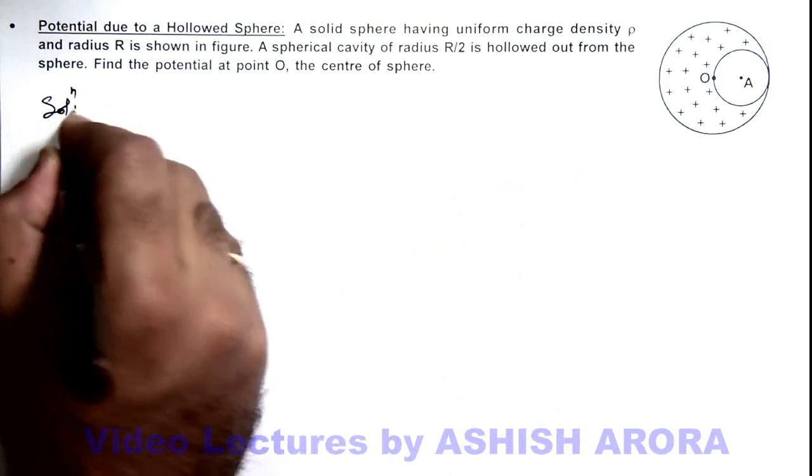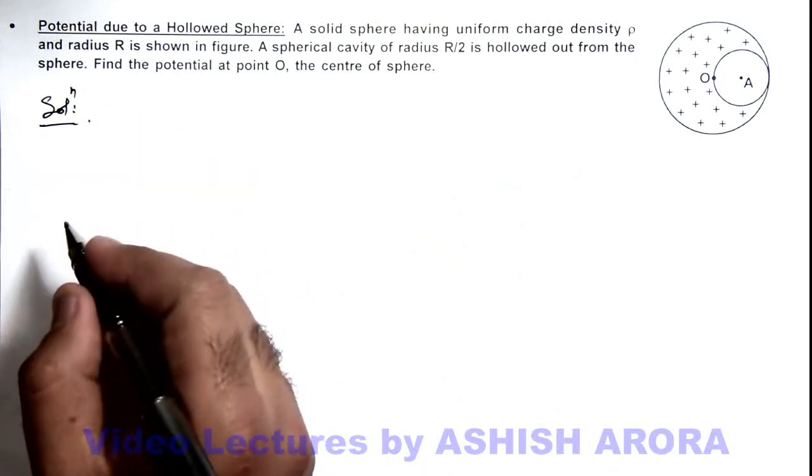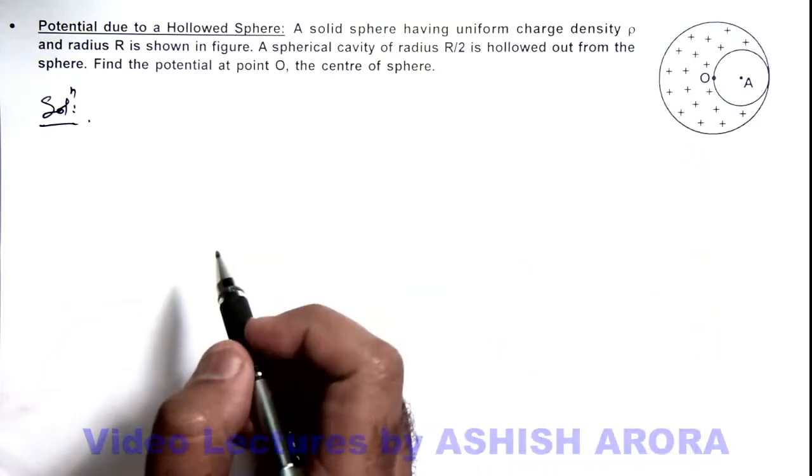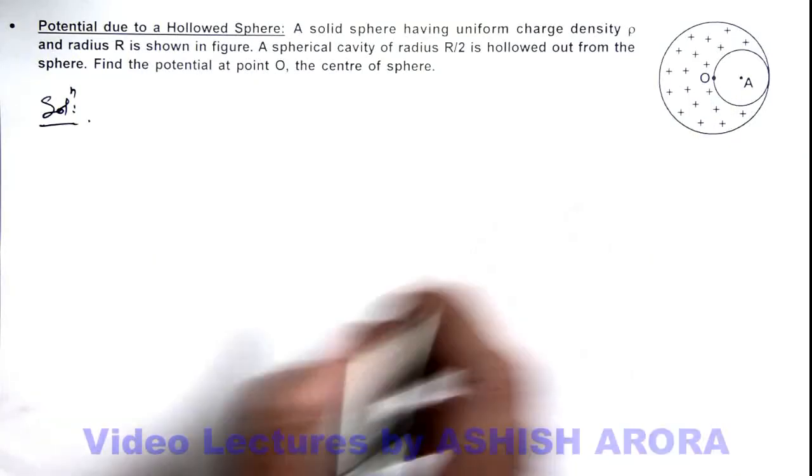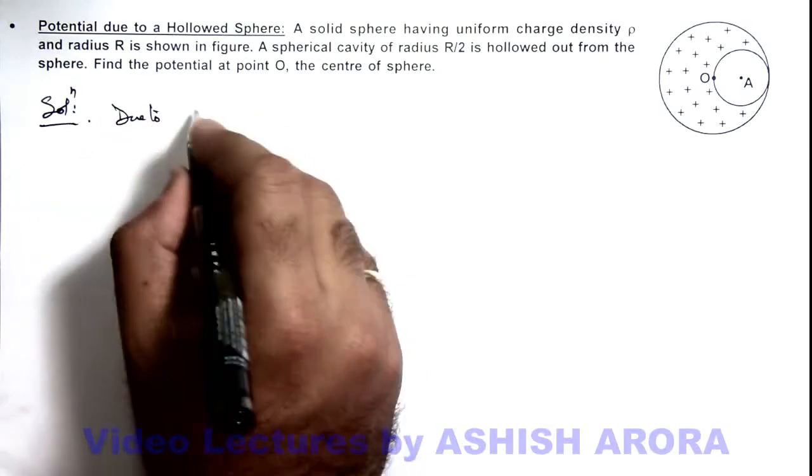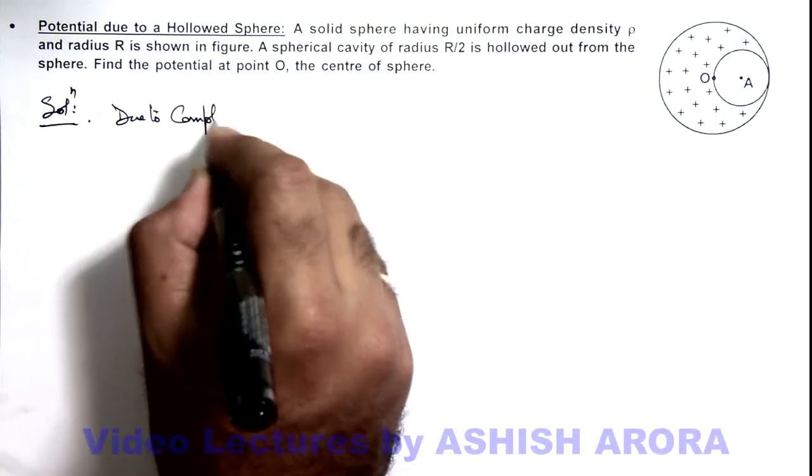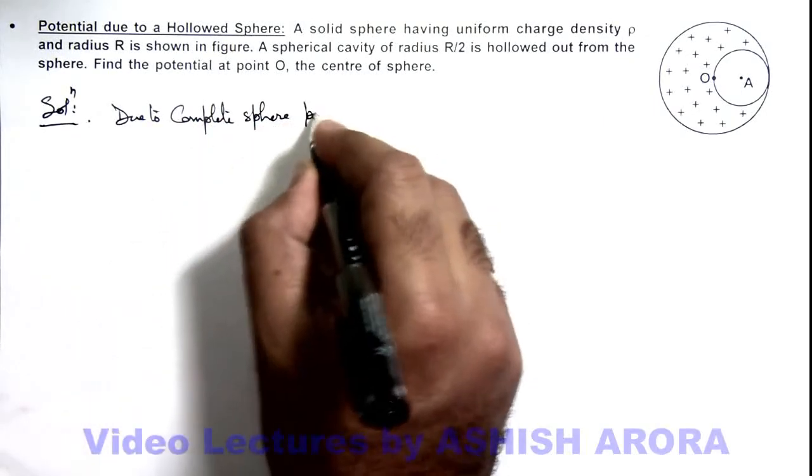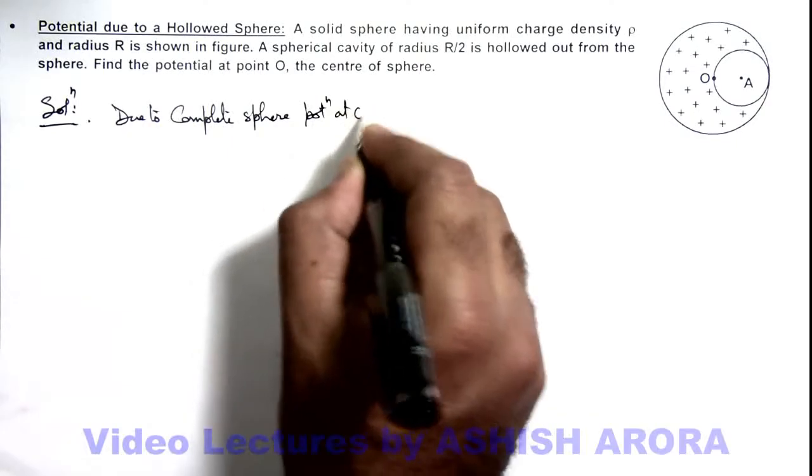And here in the solution, we can first calculate the potential due to the complete sphere at O if we assume the charge is also filled in the hollowed region. So here we can write, due to complete sphere, potential at O is...